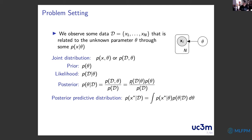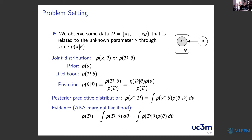The posterior predictive distribution gives the probability of a new fresh data point after observing the data. The marginal likelihood — or evidence — is obtained by integrating out all possible values of parameter theta. While it is treated as a constant when computing the posterior, in some situations you need it, and computing it is in most cases one of the most difficult tasks in machine learning.